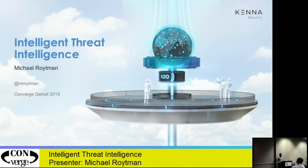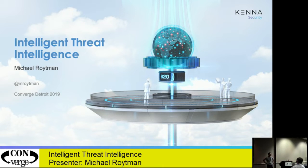We've got two interesting data sets that are a byproduct of the product, and we've published a couple of papers recently, just academic ones, on what that data means. The first data set is all the vulnerabilities and assets that our customers have. You can think of that as describing enterprise environments. We've got about 400 enterprises in there, up to 4.7 billion vulnerabilities, over 15 million assets. An asset is an IP, a database, whatever you scan in with a Qualys scanner, a Veracode, or Tenable, or Rapid7.